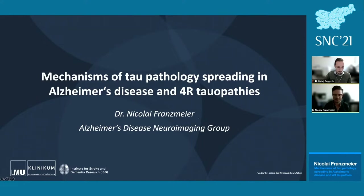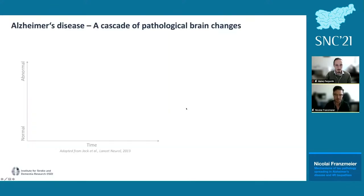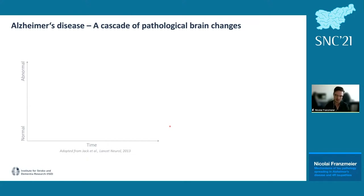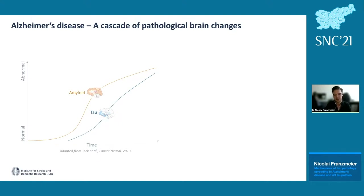Thank you very much for the invitation. It's a great pleasure to introduce our work here at this conference. The topic of my talk will be on mechanisms of tau pathology spreading in Alzheimer's disease and four-repeat tauopathies. I'll start with introducing our work on Alzheimer's disease and give a very brief introduction of our current understanding. We nowadays have a biological definition of Alzheimer's disease, or AD, which starts with the deposition of beta-amyloid in the brain, followed by the expansion of tau pathology — the two defining features of the disease — leading to neurodegeneration and cognitive decline.